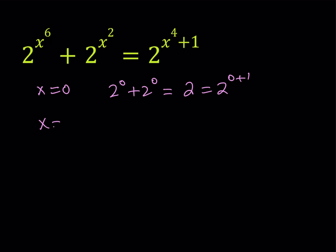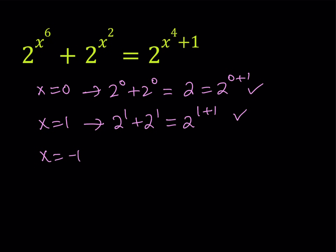What about x equals 1? Those are kind of like trivial cases. If x is equal to 1, we get 2 to the power of 1 plus 2 to the power of 1 on one hand, and on the other hand we get 2 to the power of 1 plus 1, which is 2 to the second power, which is 4. So 2 plus 2 equals 4, and x equals 1 also checks. Since we only have even powers of x, if x equals 1 works, x equals negative 1 also works. So we have three solutions so far.